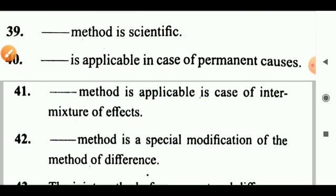Question 42: Dash method is a special modification of the method of difference. Answer: The method of residues. Question 43: The joint method of agreement and difference is a method of dash and dash. Answer: Observation and proof. Question 44: Dash method is workable to a certain limit. Answer: The method of concomitant variation.